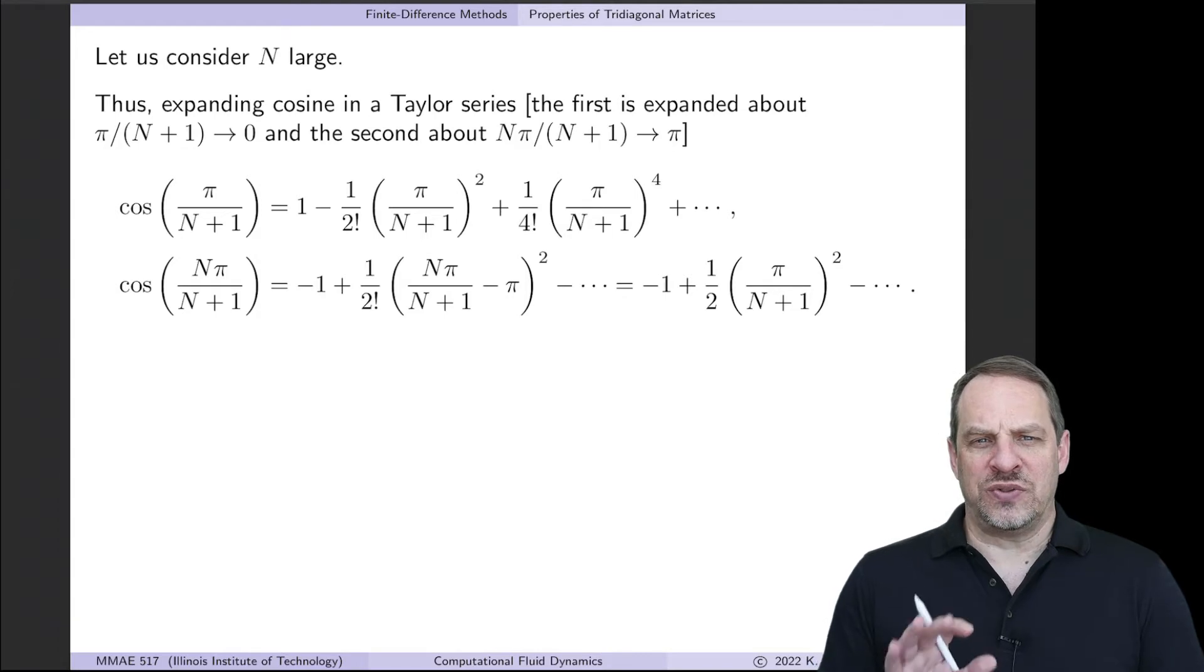Again, the details aren't terribly important. Let's just focus on how we can use these Taylor series approximations, which we'll truncate in order to get an approximation for the condition number when N becomes large.